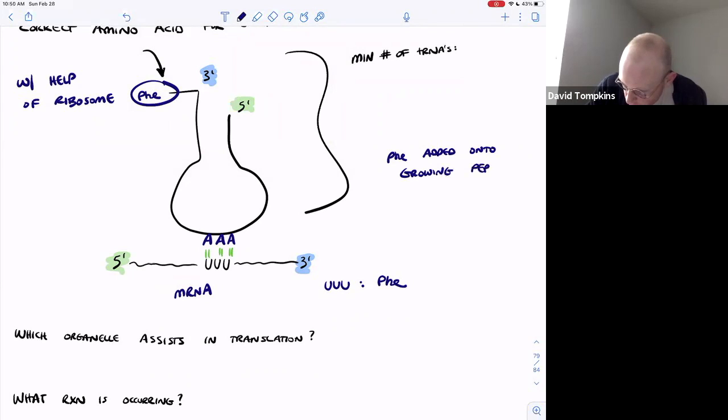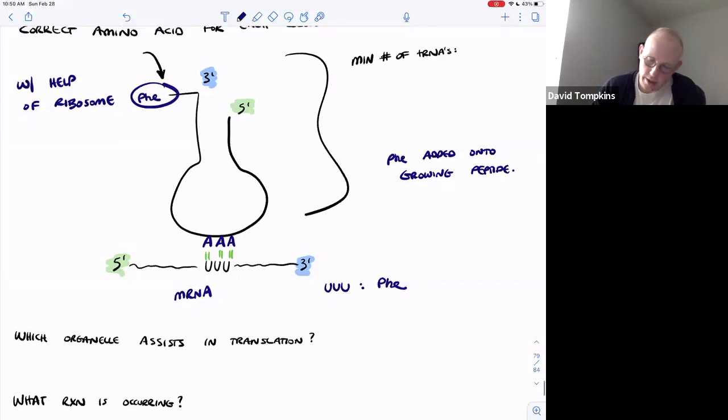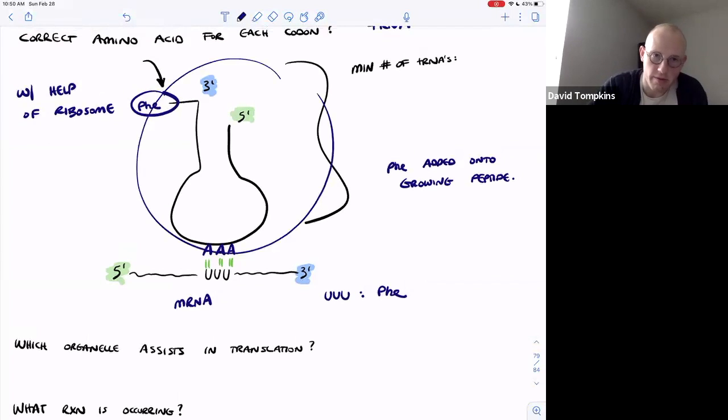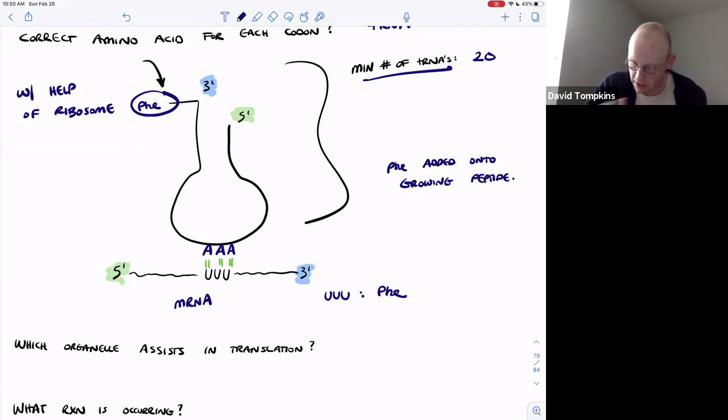One single tRNA is going to be specific for one amino acid, so a minimum of 20 tRNAs are required since there are 20 naturally occurring amino acids. I think there's actually more than that for some genetic diversity, but theoretically a cell could get by with a minimum of 20.